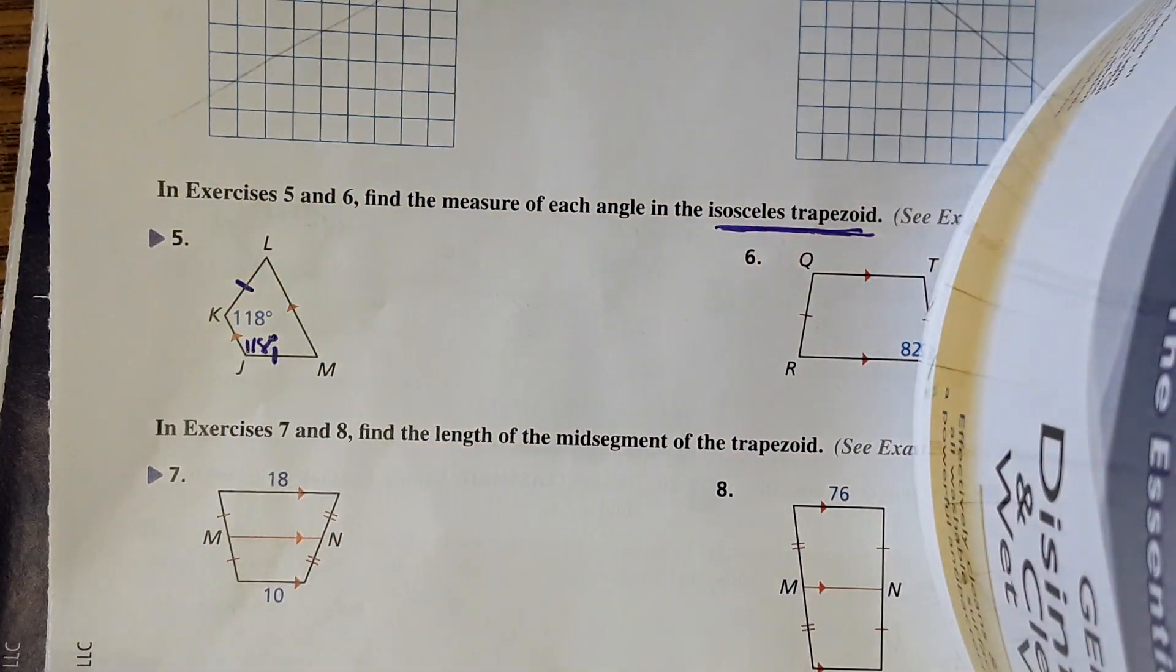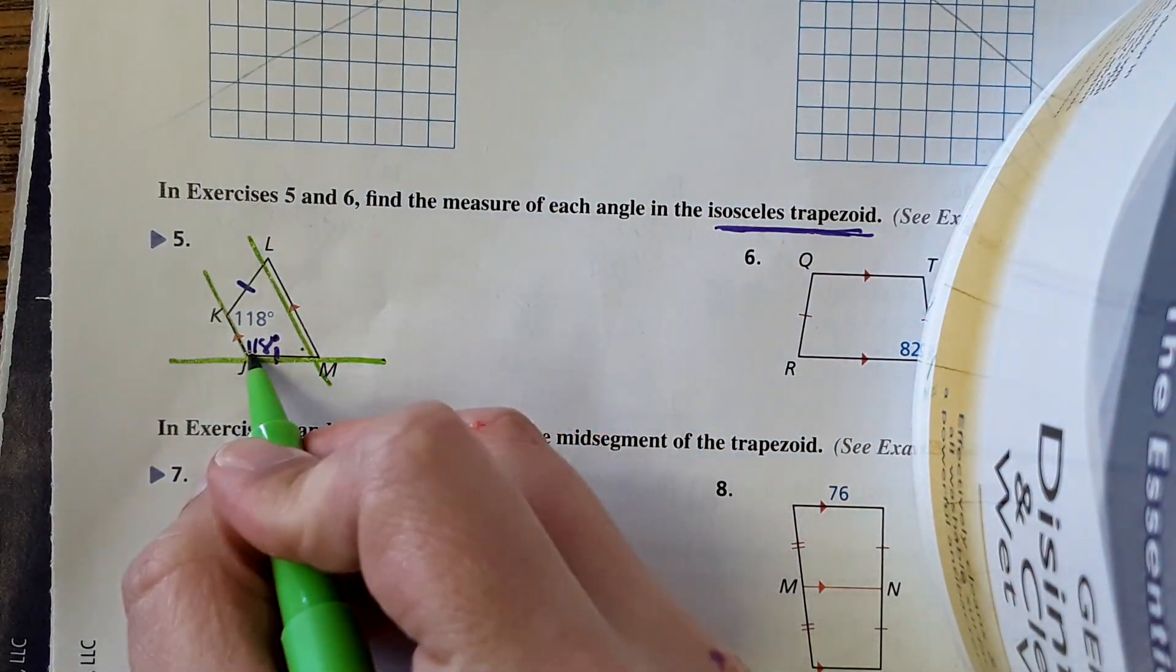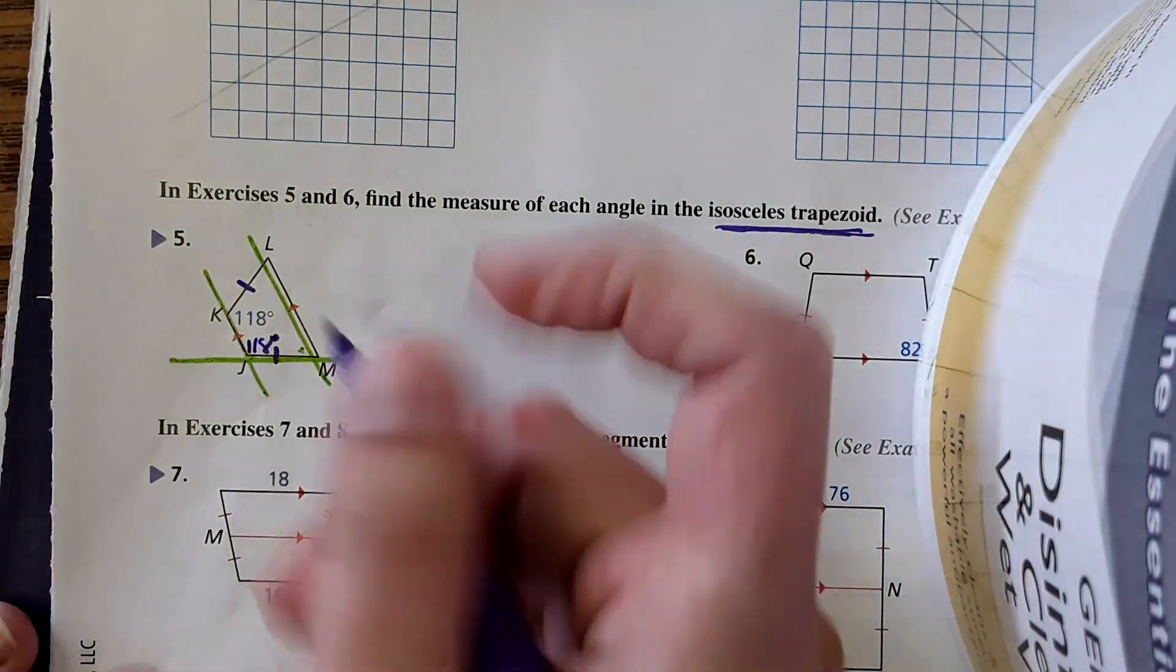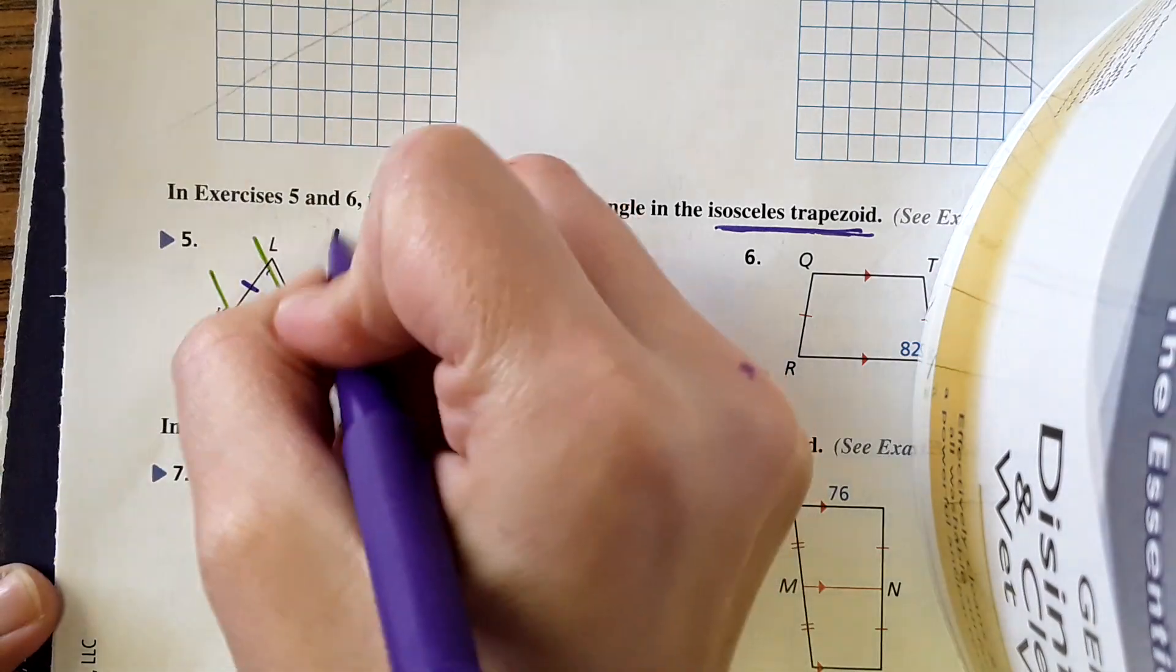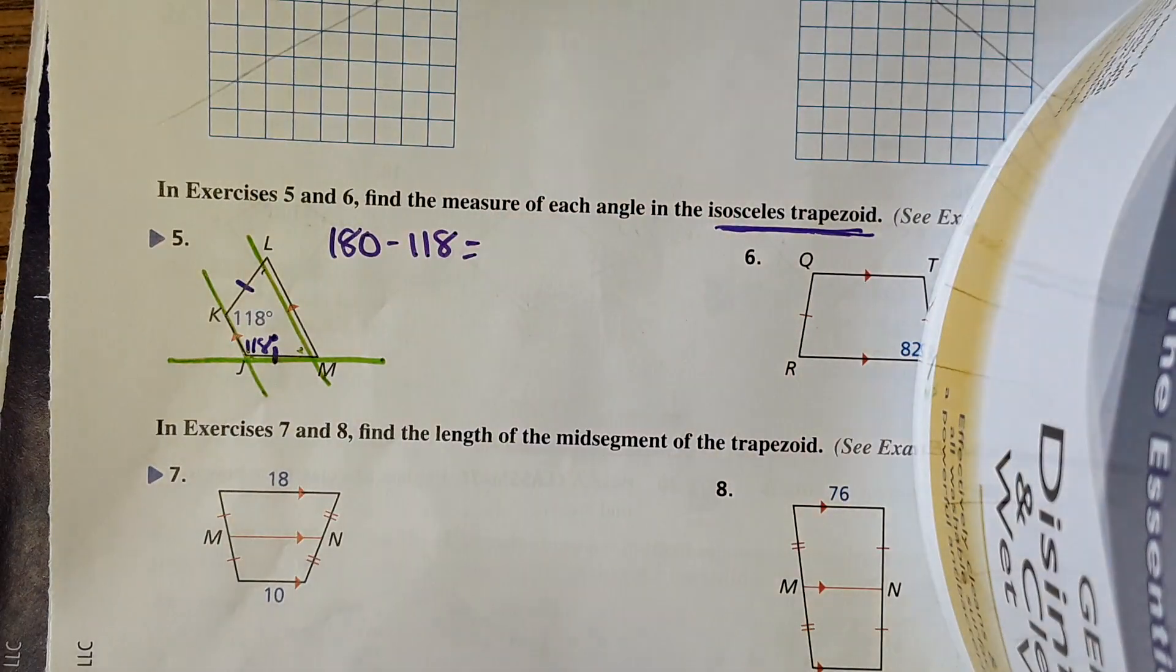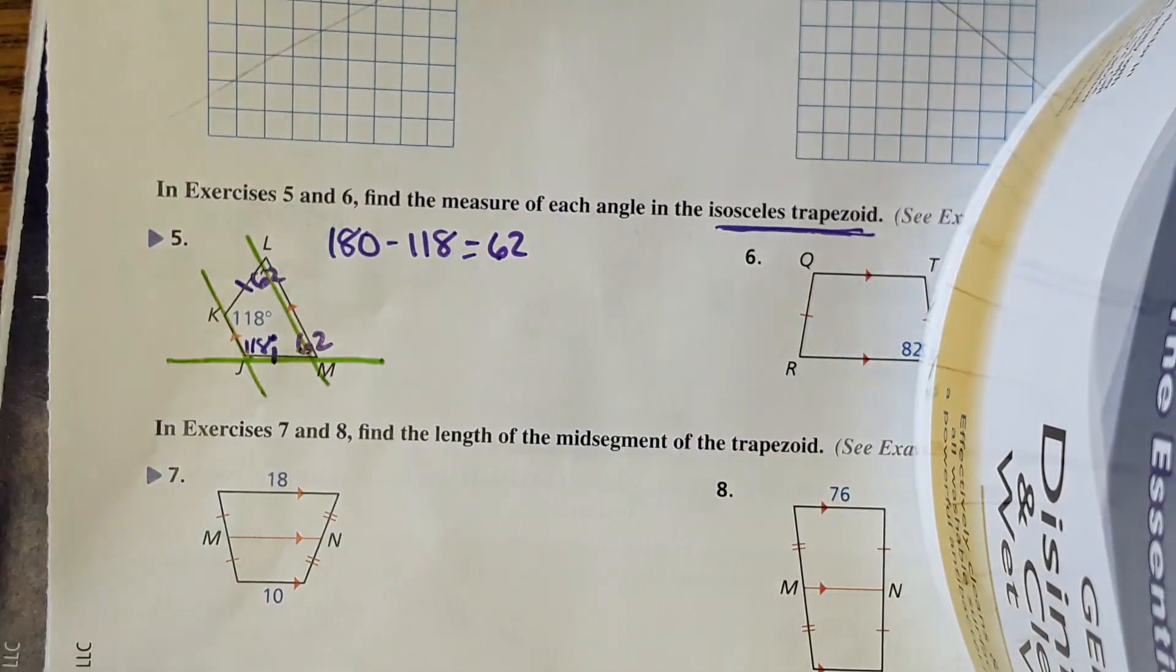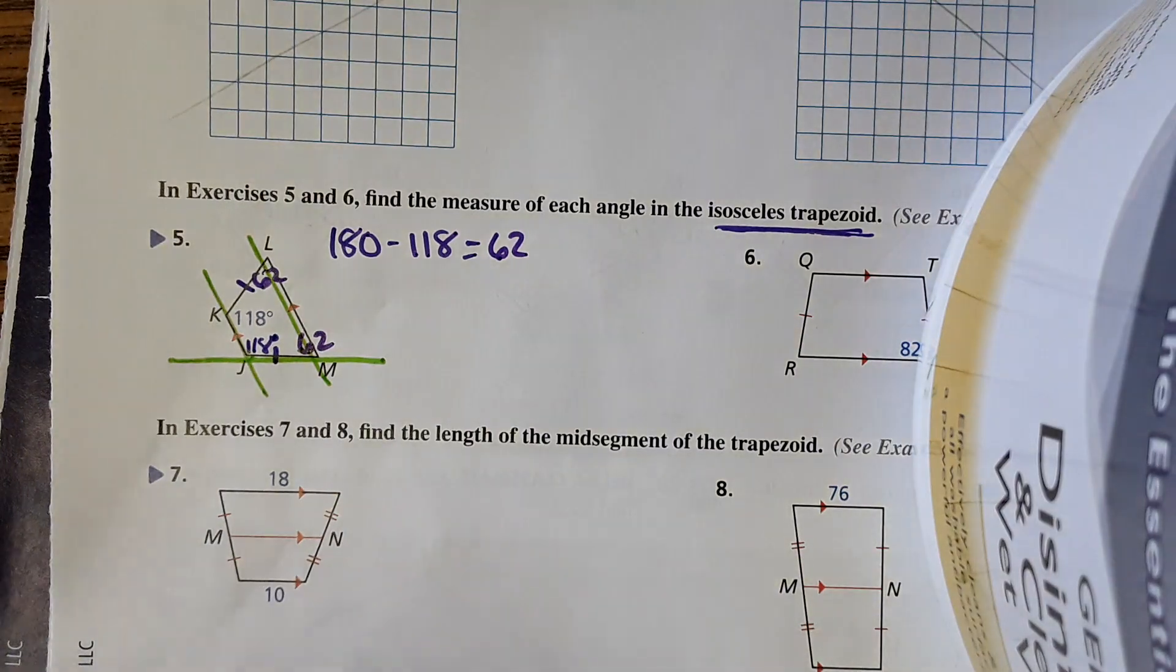And then also remember you have parallel lines and a transversal here, so these two angles are supplementary. So to find these base angles we're going to do 180 minus 118, and that equals 62. So 62 here and 62 here.